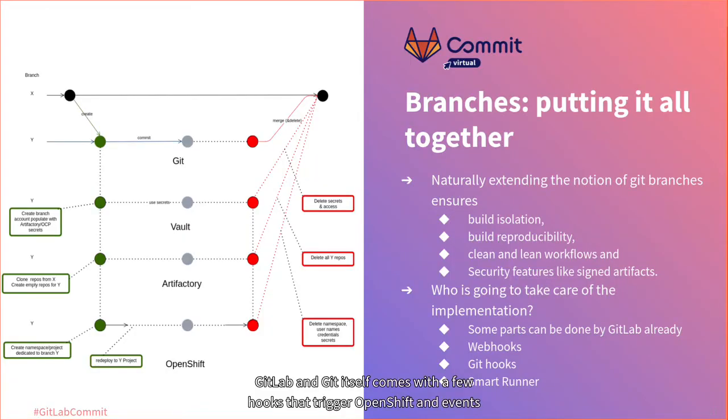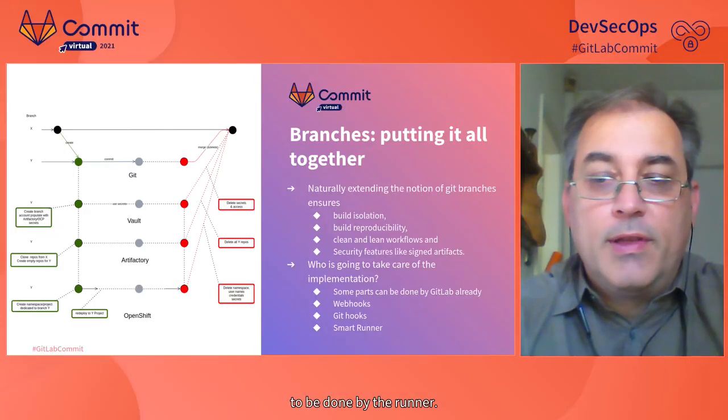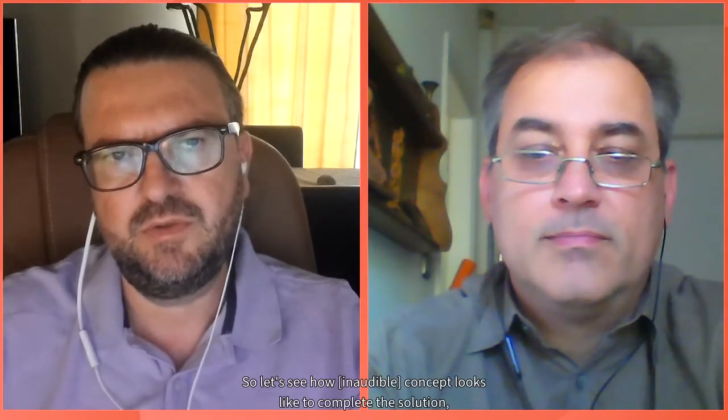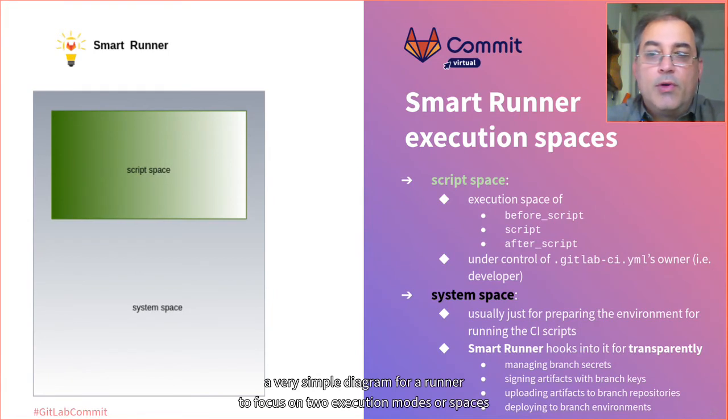We have several angles to place our integration code. GitLab and Git itself come with a few hooks that trigger upon certain events that we can use. The rest — actually most of the work — needs to be done by the runner. We already identified the runner as the centerpiece of integration. So let's see how the smart runner concept looks to complete the solution. A simple diagram for a runner focuses on two execution modes: script space and system space.